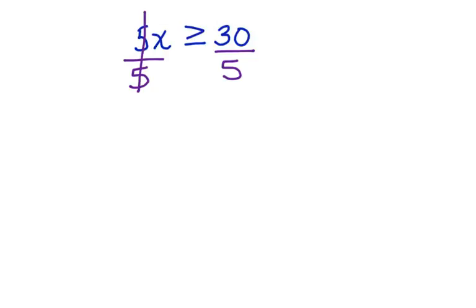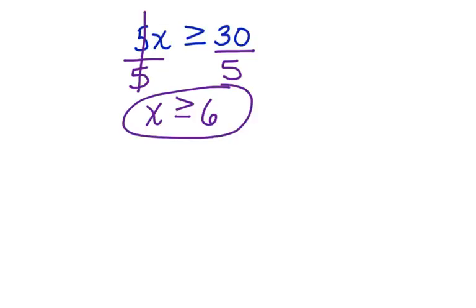5 divided by 5 cancels. Bring down the x. x is greater than or equal to 30 divided by 5, which is 6. If we choose a value that is greater than or equal to 6 for x, that will make this inequality into a true statement.